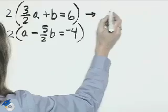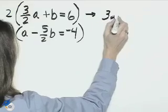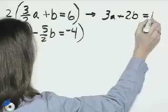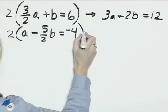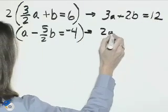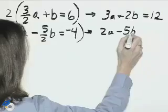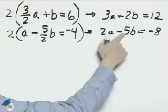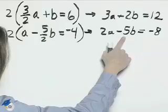First equation will be 3a plus 2b equals 12. And the second equation will be 2a minus 5b equals negative 8. And now since the b's have opposite signs,